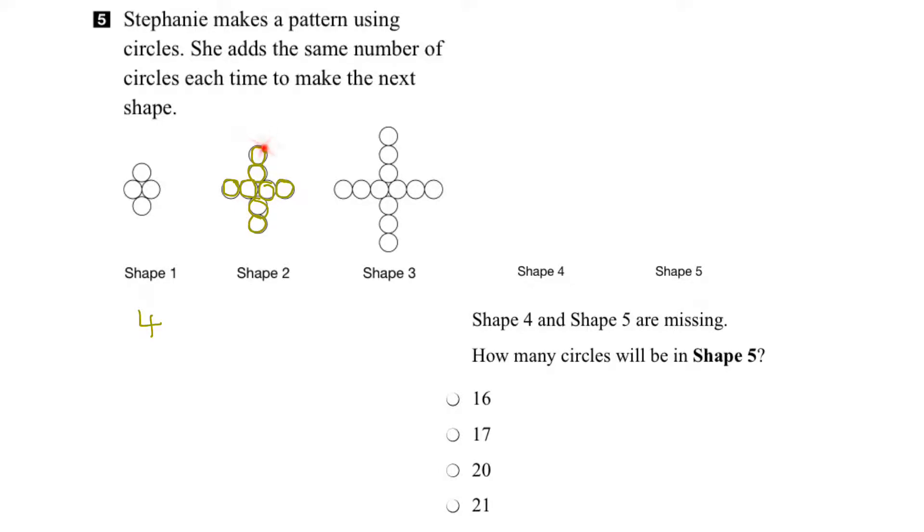So now we have 1, 2, 3, 4, 5, 6, 7, 8 circles. And we can put that number here.